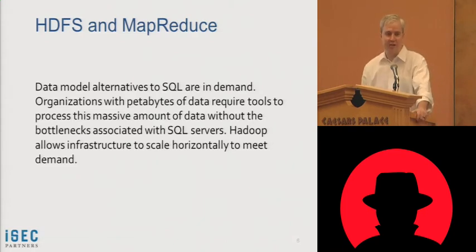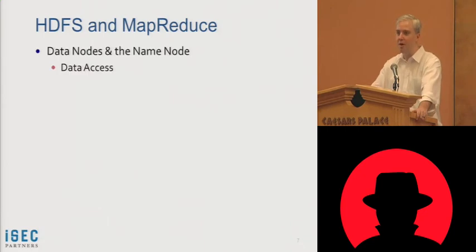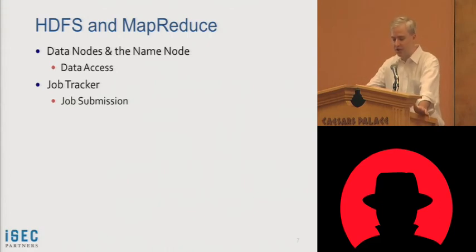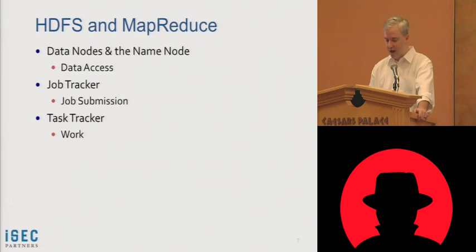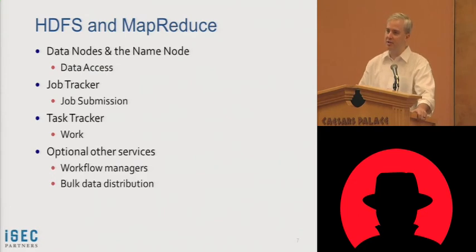Organizations that have petabytes of data use Hadoop to analyze that data. In the Apache Foundation's Hadoop project, there is the Hadoop file system, which is made up of data nodes and name nodes that provide data access. And then we have the MapReduce engine, which is made up of two primary components: the job tracker, to which users submit jobs, and task trackers, which are assigned those jobs and are physically as close to the data as possible — this is very important for Hadoop performance. There are also other optional services like workflow managers and bulk data distribution, which is used to even out data distribution across the cluster.